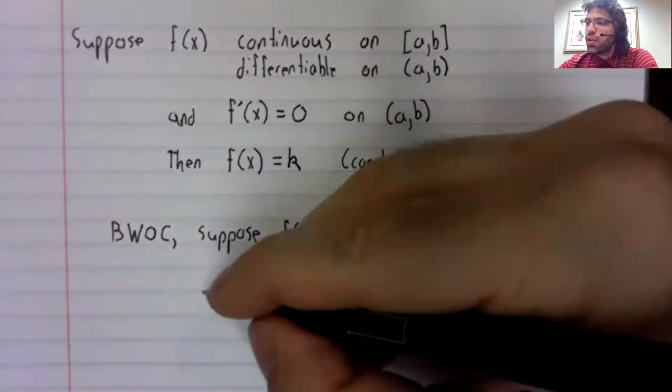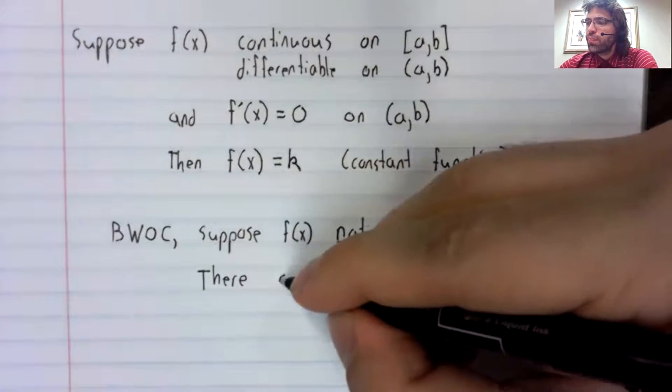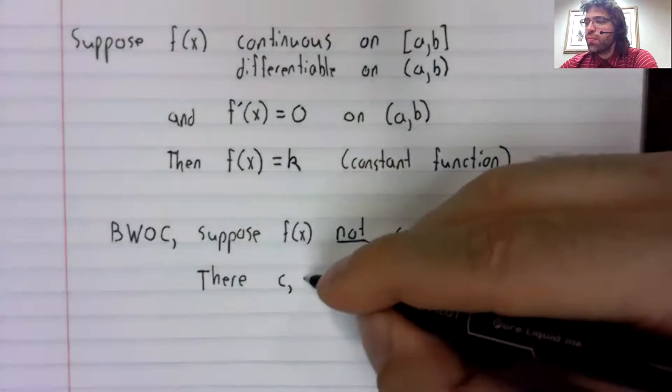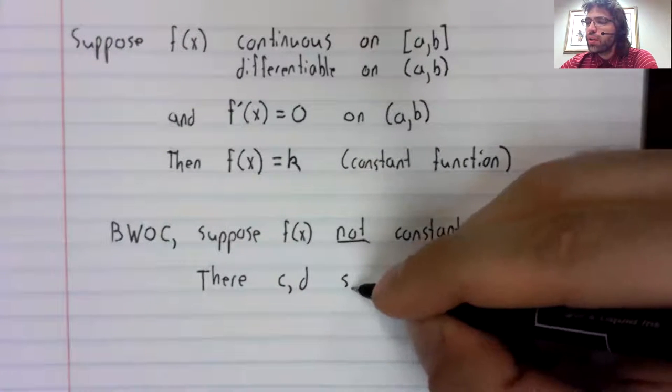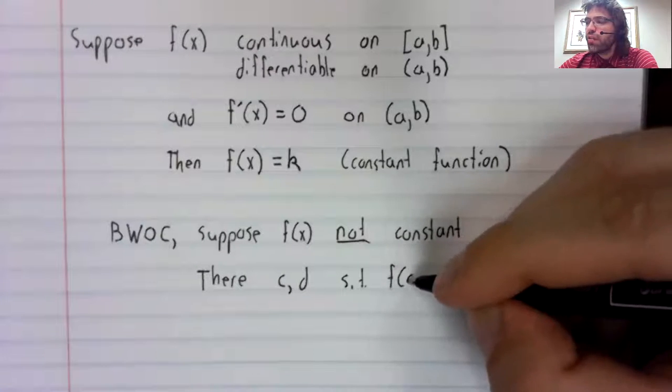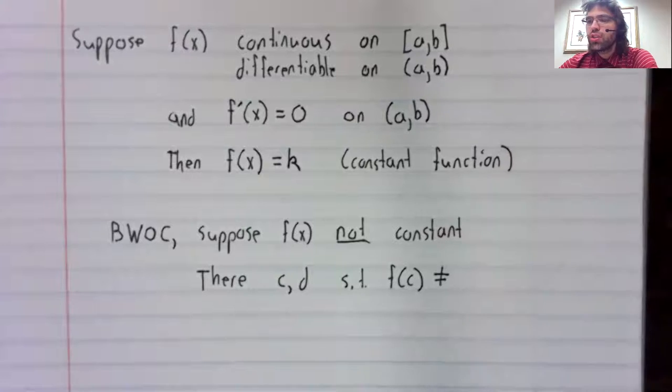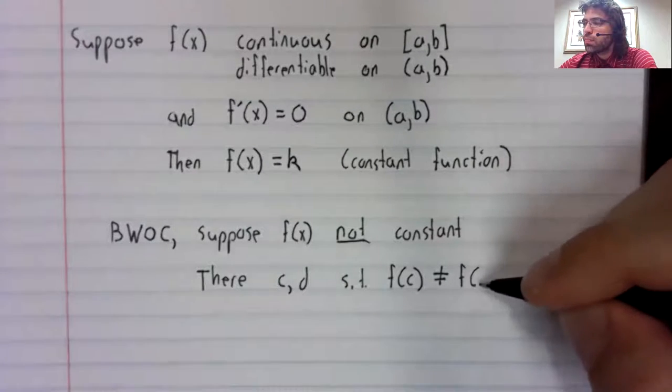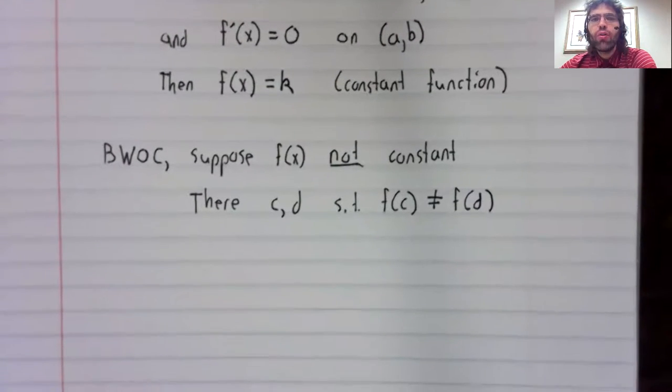If f(x) isn't constant, there is a value c and a value d such that f(c) does not equal f(d).